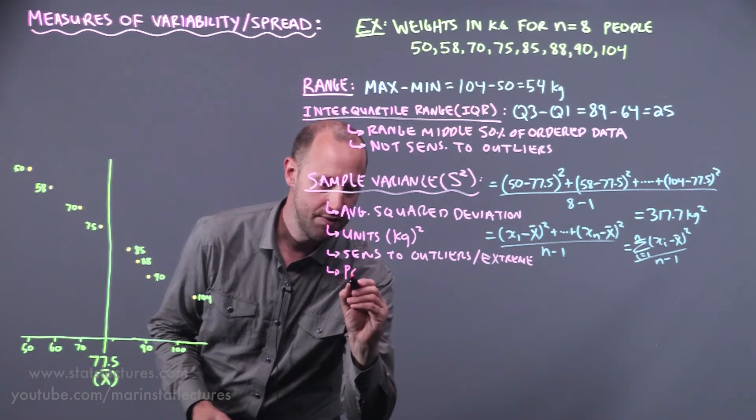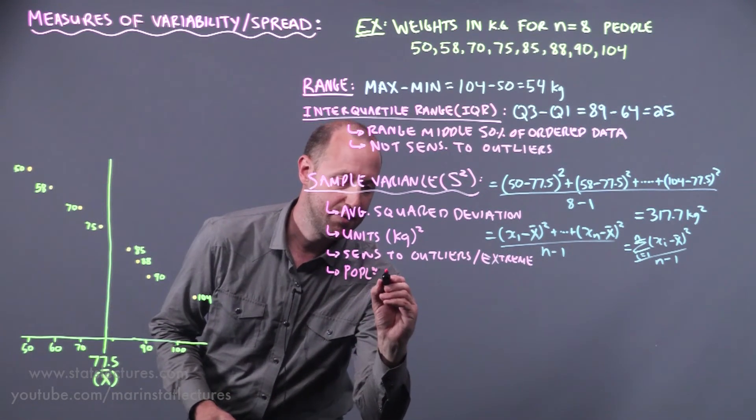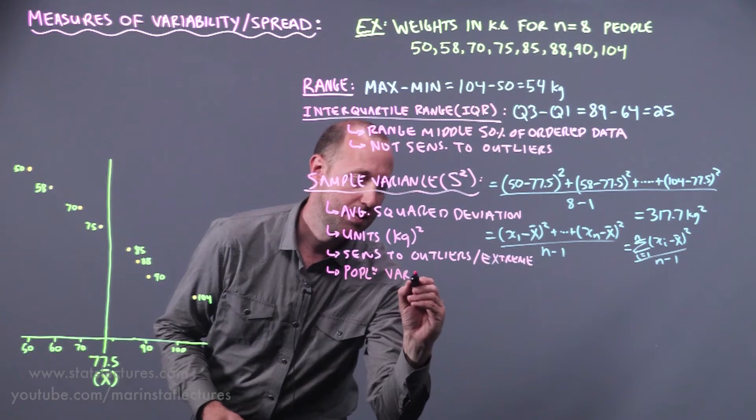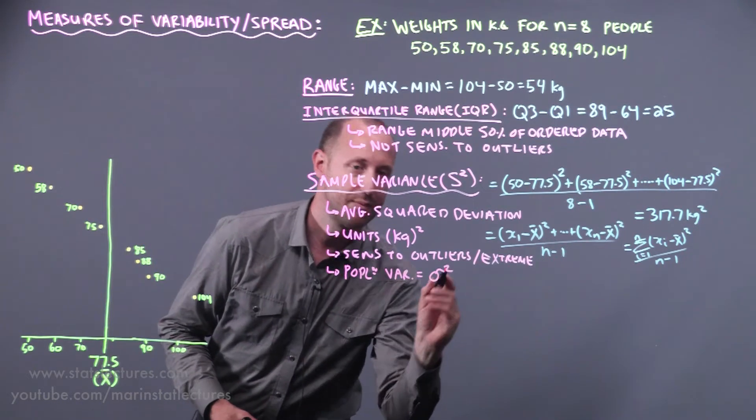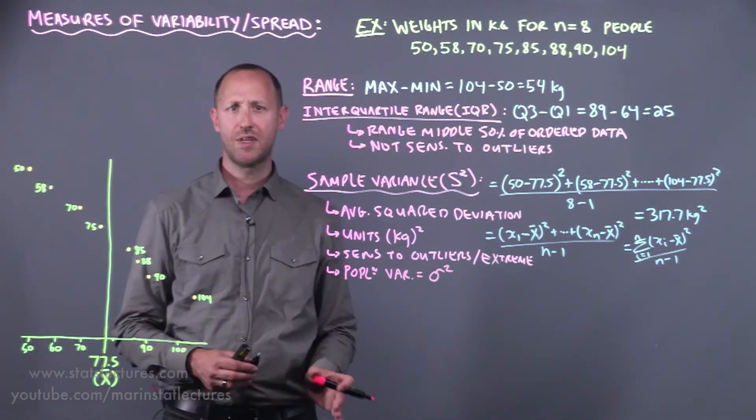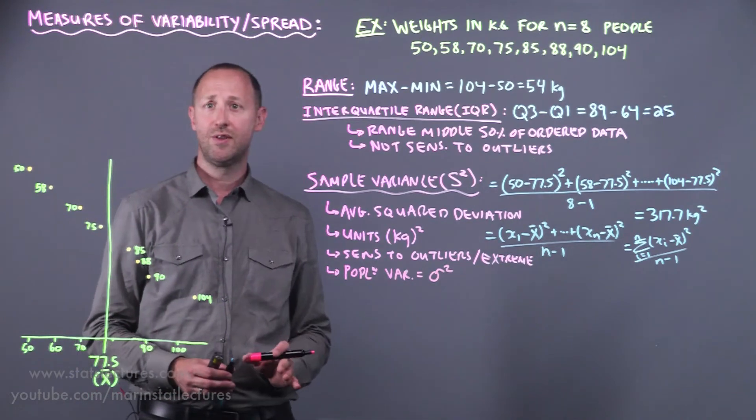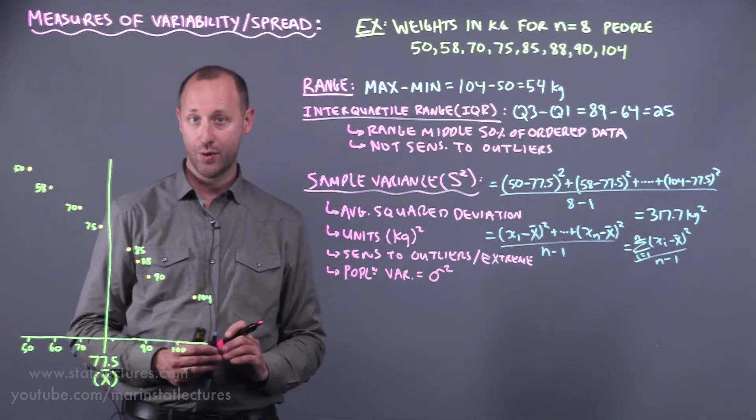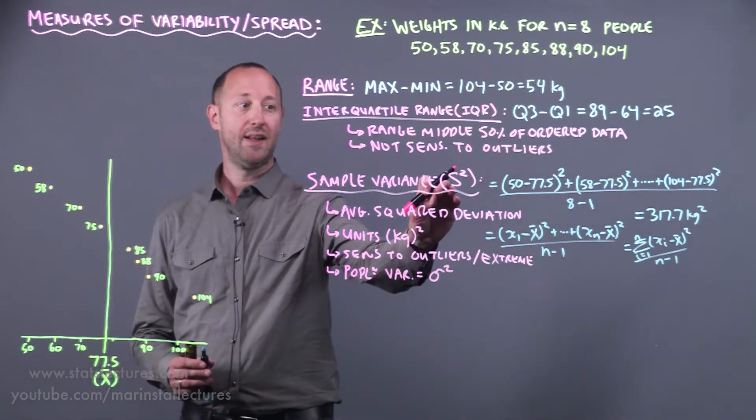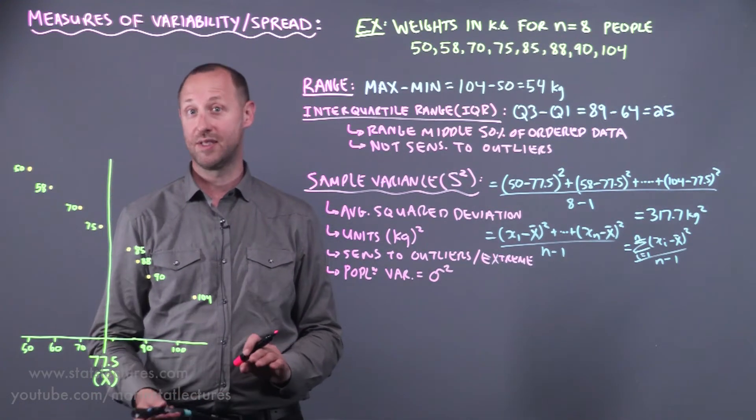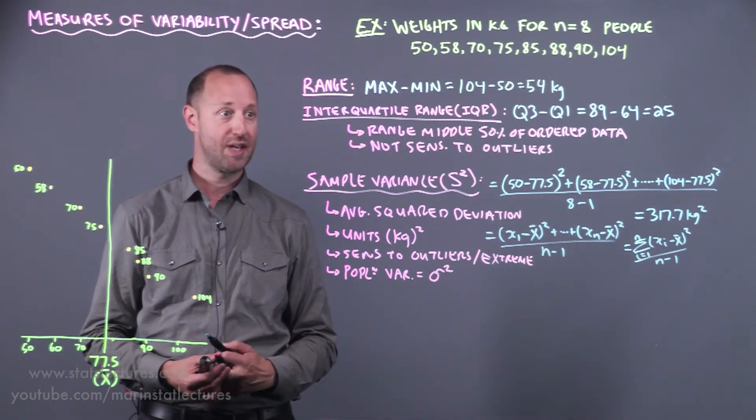Here we're talking about estimating it for a sample. If we're looking at the population variance we write using sigma squared. We've talked about this in earlier videos, the use of greek letters to represent population or true theoretical values and latin letters to represent statistics or sample estimates from a sample of data.